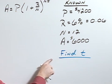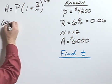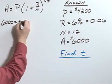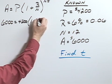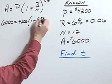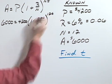Now that we know these values, let's put them into our formula. So $6,000 equals $4,200 times 1 plus 0.06 over 12 to the 12t.